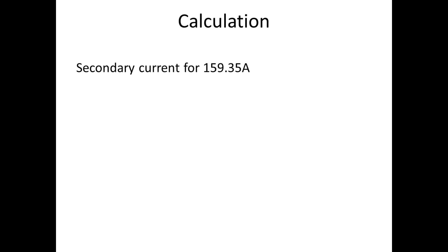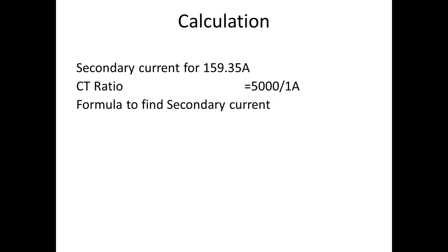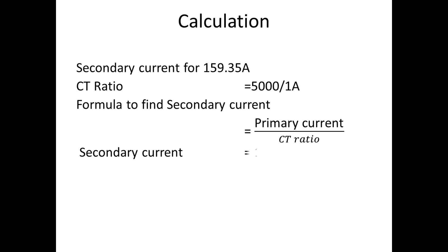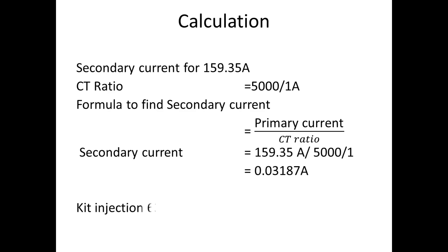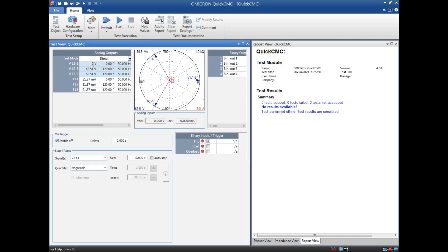The value which I got is primary current. But for testing of this function we need to inject secondary value, so now I am going to find the secondary current. The CT ratio is 5000 / 1. The formula to find the secondary current is primary current divided by CT ratio. The secondary current is 159.35 amps divided by 5000, which gives 0.03187 amps. For the kit, we have to inject 63.5 volt and 0.03187 amps — that is 31.87 milliamps — into the relay, and we have to wait until the trip time which we have set in the relay.